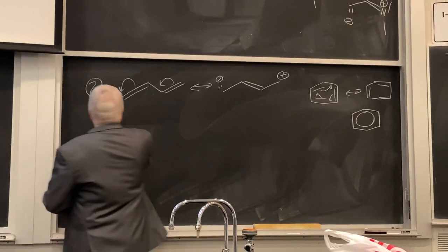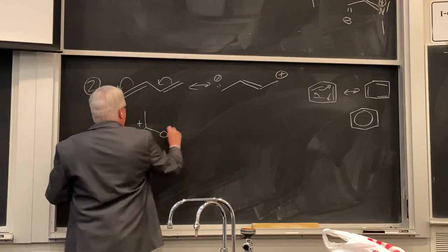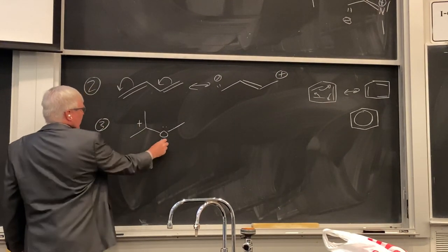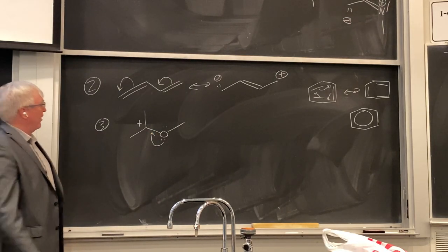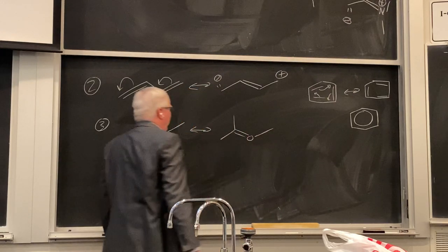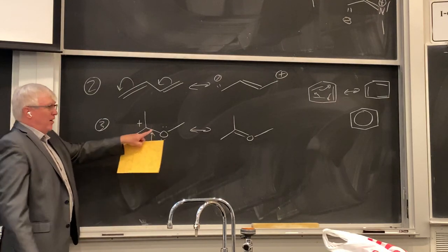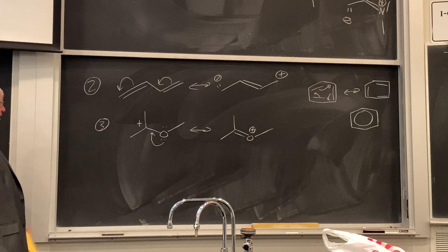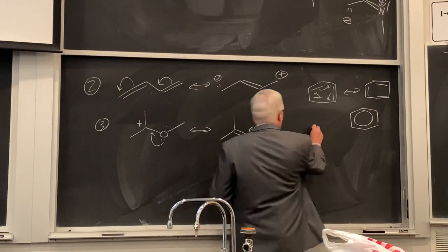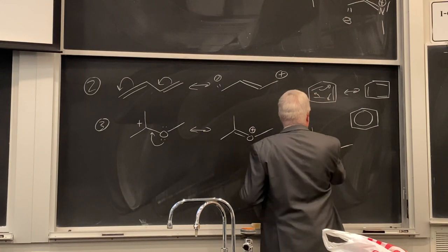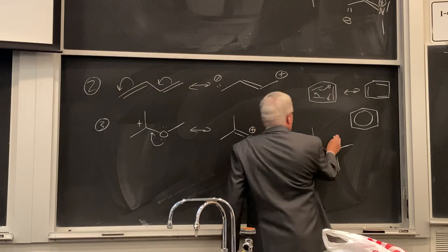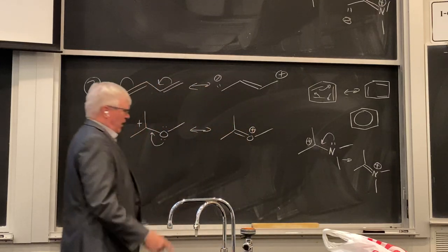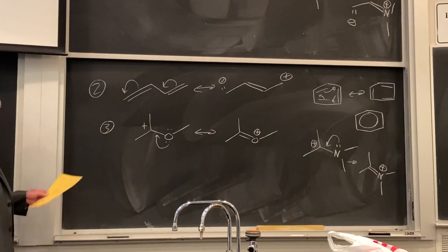Type three resonance structures: a carbocation next to a heteroatom like oxygen or nitrogen that has lone pairs. Taking one lone pair of oxygen next to a cation, the resonant structure moves the positive charge onto the oxygen — helping stabilize the carbocation. Similarly, a carbocation next to a nitrogen (an amine) forms a resonant structure where the positive charge moves to nitrogen, giving an aminium ion. We'll look at aminium ions and amines later.